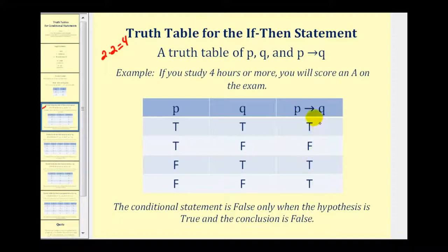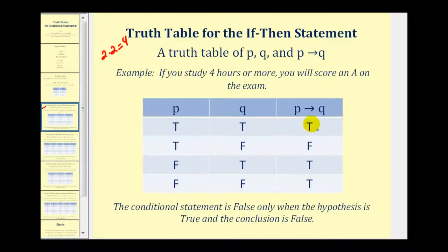There are a couple ways of making sense of this third column. One way is to think of if p then q as an agreement or a promise by your instructor: if you study four hours or more, you will score an A on the exam. The only time if p then q would be false is when the instructor violates this agreement. So if both p and q are true, if p then q is of course true. But if p is true and q is false — meaning you do study four or more hours but don't score an A — that is in direct violation of what the instructor promised, and therefore it would be false.